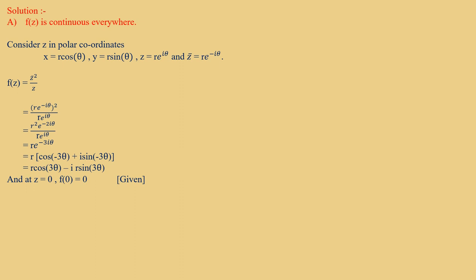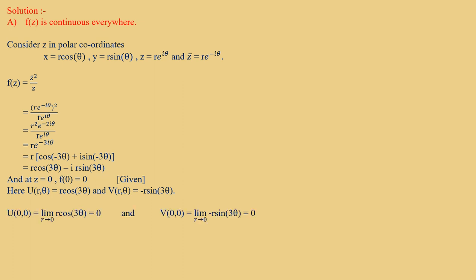At z = 0, F(0) = 0 as given. So u(r,θ) = r cos(3θ) and v(r,θ) = −r sin(3θ). We only need to check continuity at z = 0 since at all other points it is already continuous. The limit as r → 0 of r cos(3θ) = 0 and the limit as r → 0 of −r sin(3θ) = 0. Hence u and v are continuous everywhere, so F(z) is also continuous everywhere. Therefore, Option A is true.